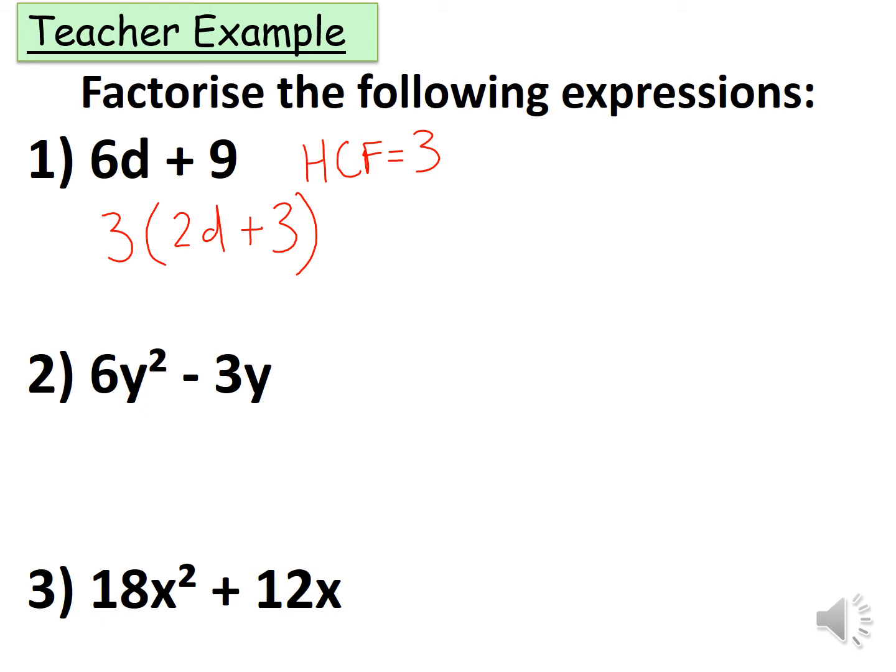Let's have a look at the second question. Again we need to find the highest common factor. The highest common factor of 6y² and minus 3y is going to be 3y.